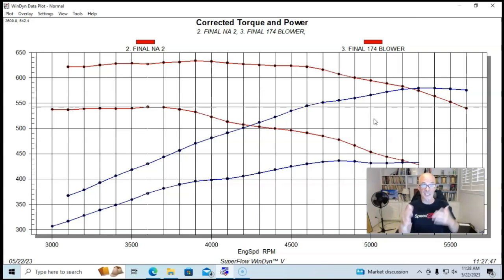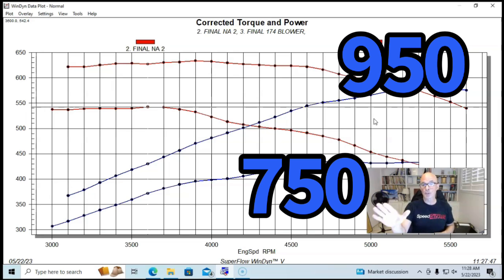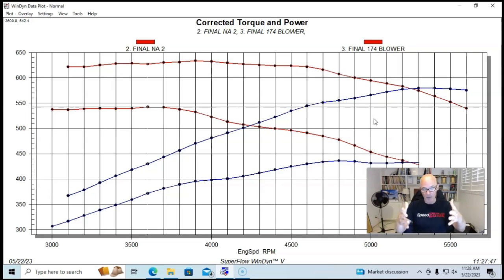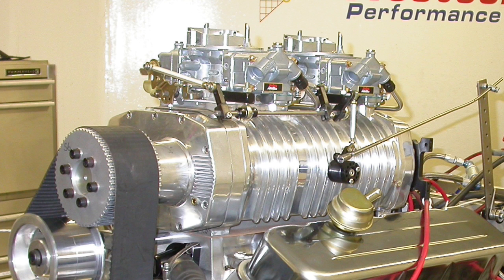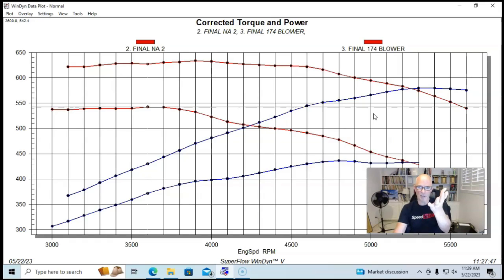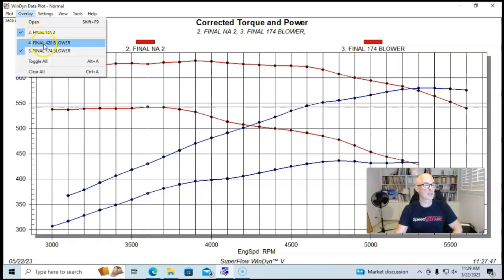The NA combination was run with a 750 Holly, and the supercharged combination was run with a 950 Holly because you want to have as much airflow going into the blower as you need. Now let's take a look and see what happens when we stepped up in blower size. We stepped up to a 420, I think this thing was called a mega blower back in the day. I don't even know if the supercharger is still available. Let me know in the comments if it still is.